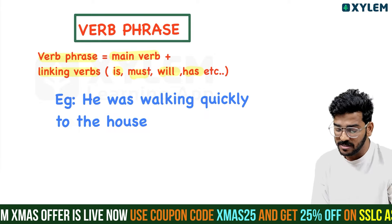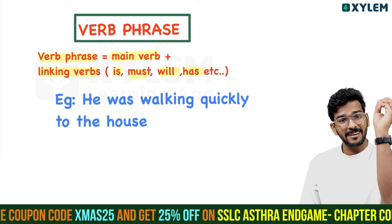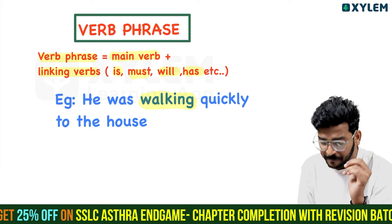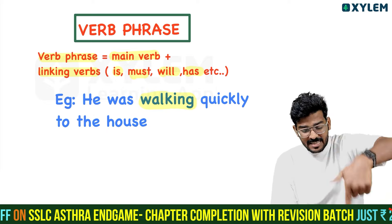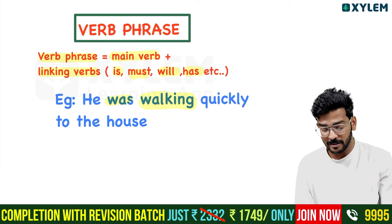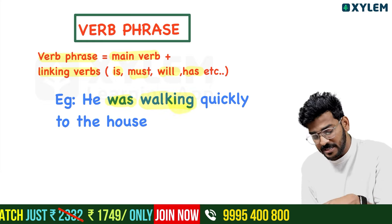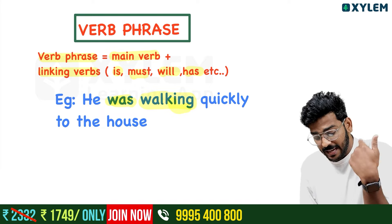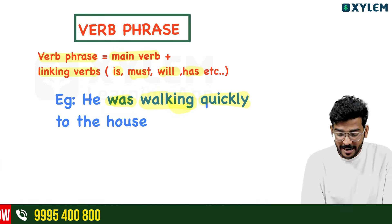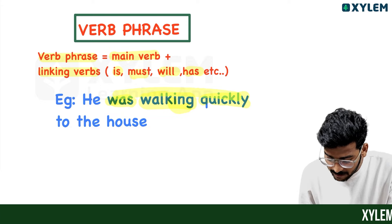For example: 'He was walking quickly.' What is the main verb? Walking is the main verb. 'Was' is the auxiliary verb. 'Quickly' is an adverb — how did he walk? Quickly. So in this sentence you have a full verb phrase.